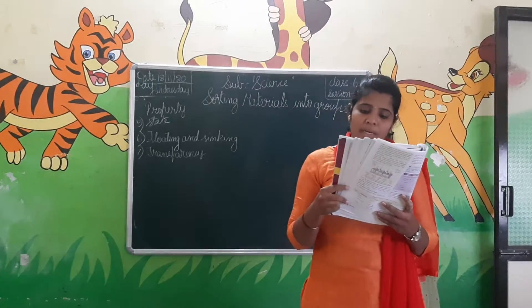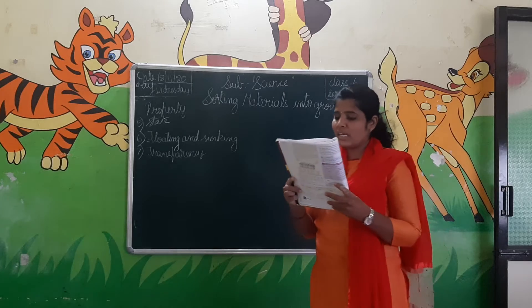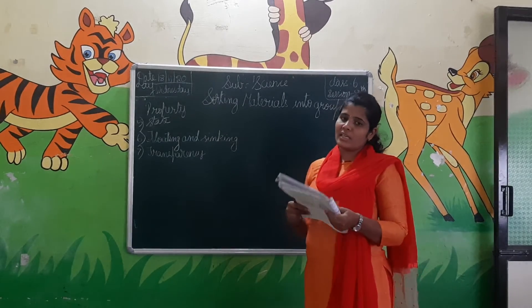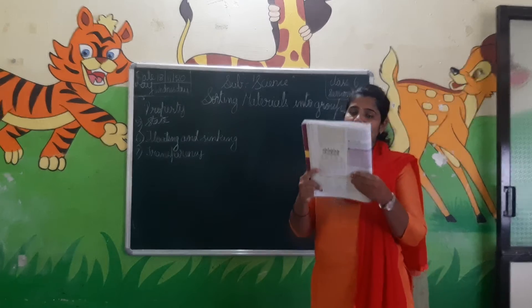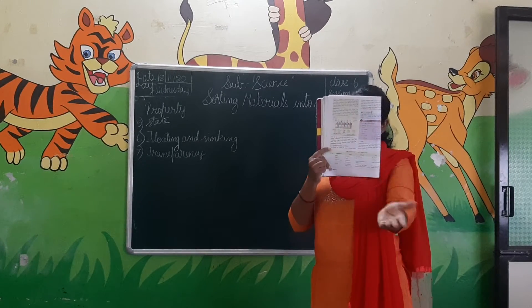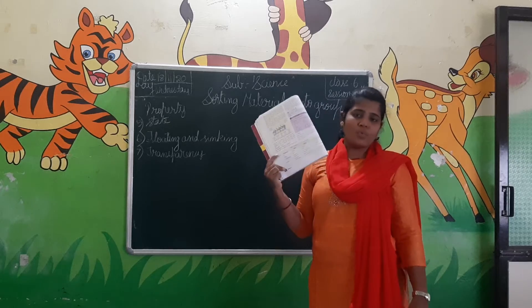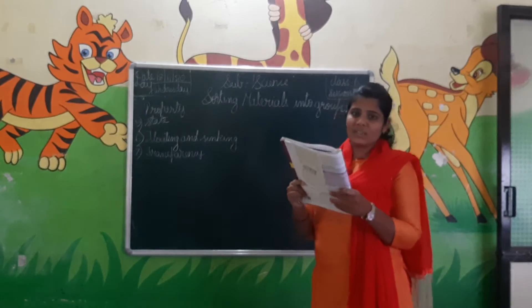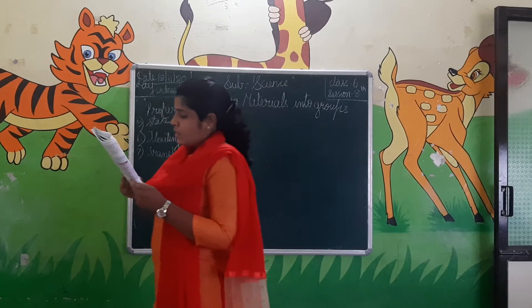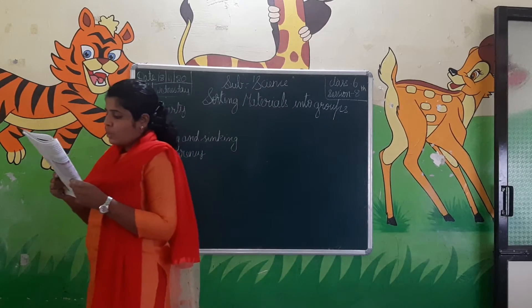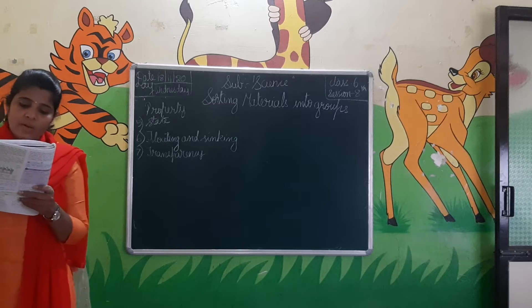Hold a cardboard in front of your eyes — you cannot see through it. If you put anything in front of you, you cannot see what is behind the cardboard. So it is not a transparent material. The materials through which we cannot see objects are called opaque materials.